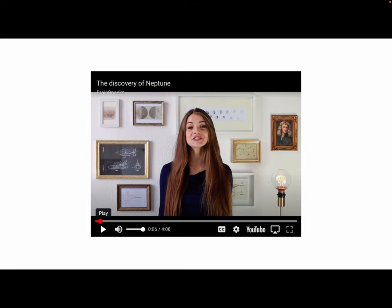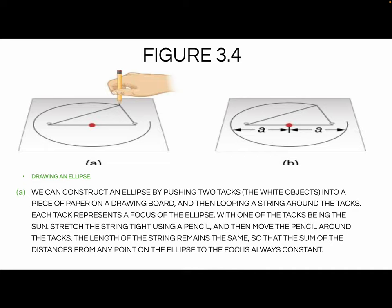So that was a little bit about Neptune and how it was discovered. This is our very last slide. To construct an ellipse, push two tacks into a piece of paper on a drawing board, then loop a string around the tacks — each tack represents a focus of the ellipse, with one tack being the sun. Stretch the string tight around a pencil and move the pencil around the tacks. The length of the string remains the same, so the sum of distances from the two foci to any point on the ellipse is always constant. That's how you draw an ellipse based on the foci.